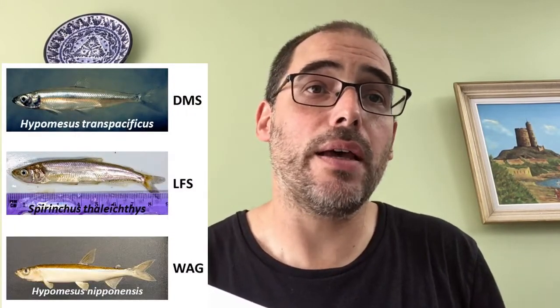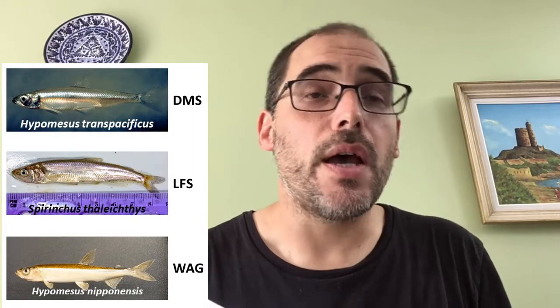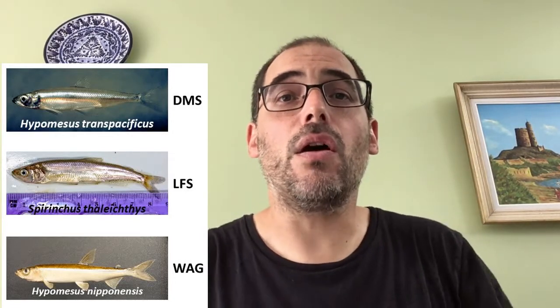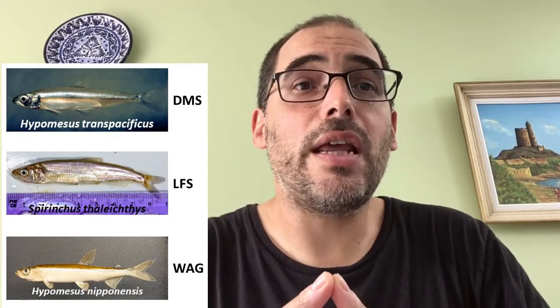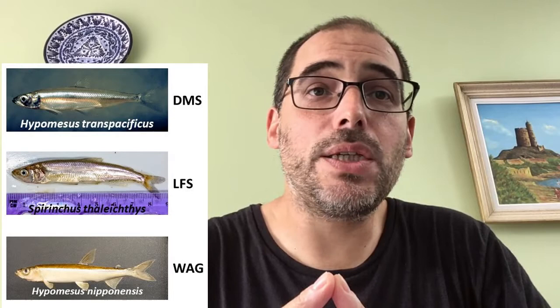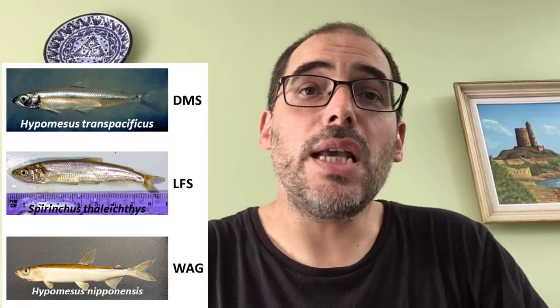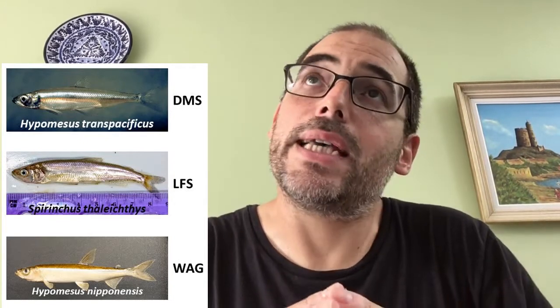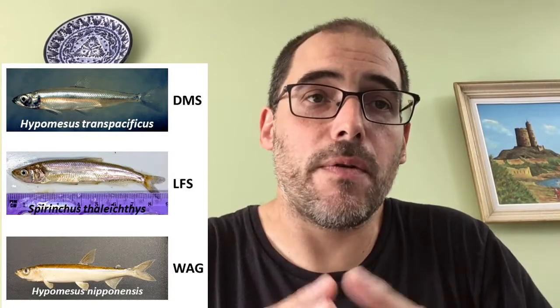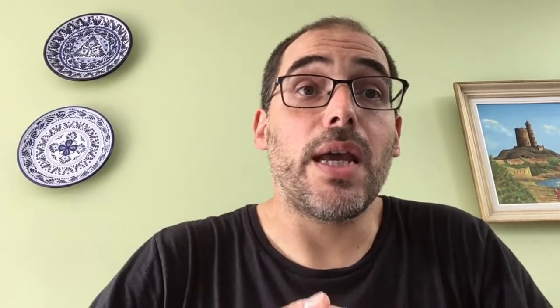They chose to work with the U.S. threatened and California endangered delta smelt, Hypomesus transpacificus; the California threatened longfin smelt, Spirinchus thaleichthys; and the non-native wakasagi, Hypomesus nipponensis. These are particularly difficult to distinguish morphologically at younger life stages, so there is an interest from ecologists to be able to identify them in the field regardless of life stage.